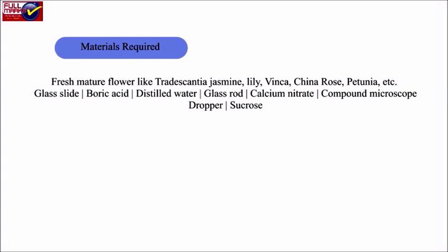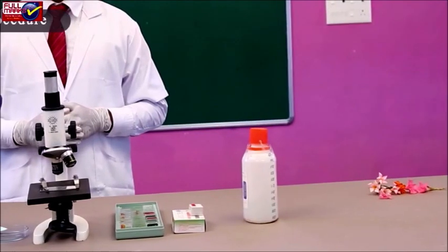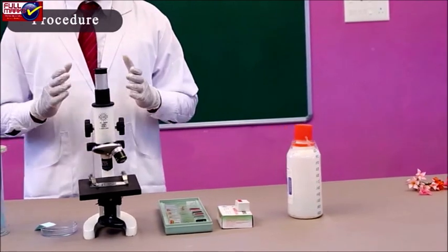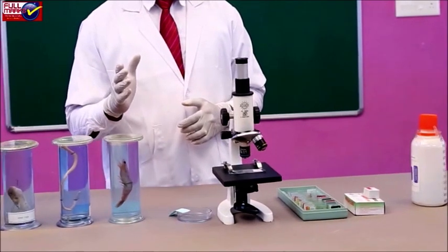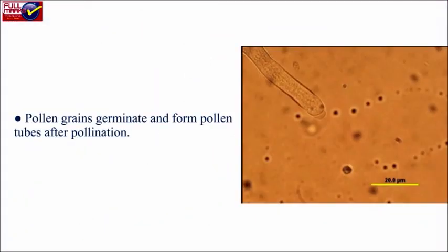Compound microscope, dropper, sucrose. Procedure: Pollen grains are male reproductive structures of an angiosperm flower as they contain male gametes. Pollen grains germinate and form pollen tubes after pollination.